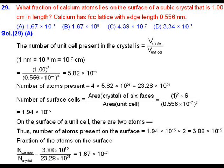Since there are 2 atoms lying on each surface of a unit cell, the number of atoms on the total surface of the crystal will be 2 multiplied by the number of surface cells, giving 3.88 × 10¹⁵. The fraction of atoms lying on the surface is the number of surface atoms divided by total atoms in the crystal, which comes out to be 1.67 × 10⁻⁷. Option A will be the correct answer.